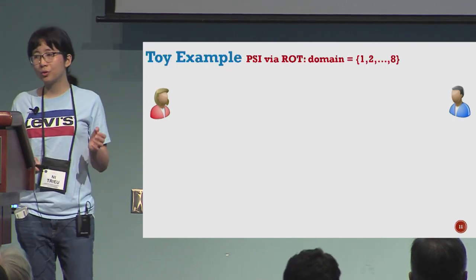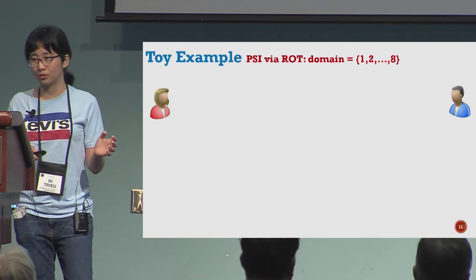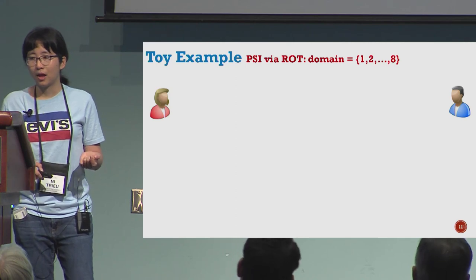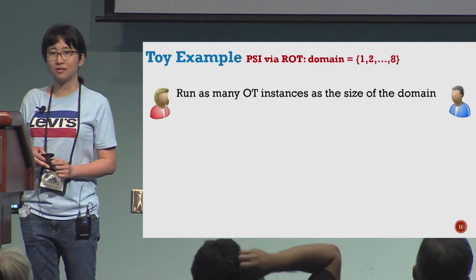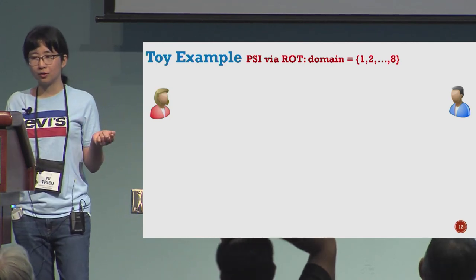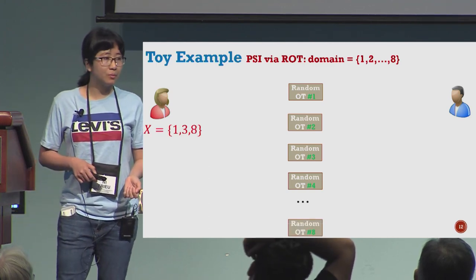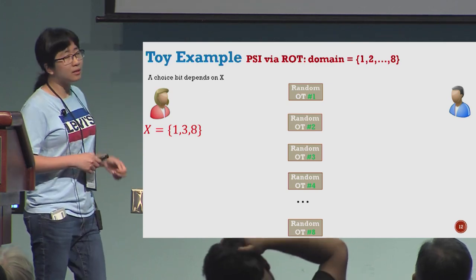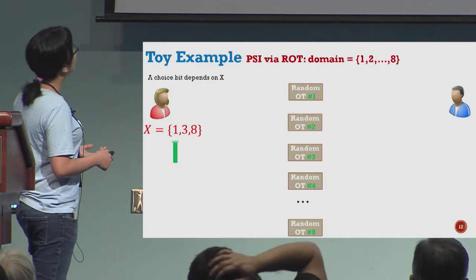Now I want to show you how we use OT for PSI, but this is not the correct protocol we want to use. This one is for PSI with a small domain. The basic idea is that the parties will run as many OT instances as the size of the domain. For example, if Alice has number 1, number 3, and number 8, her input to the OT depends on her set.